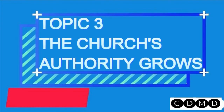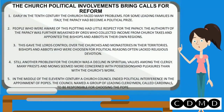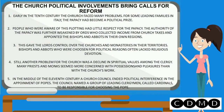Topic 3: The Church's Authority Grows. The Church's political involvement brought calls for reform. Early in the 10th century, the Church faced many problems. For some ruling families in Italy, the papacy had become a political prize. People who were aware of this plotting had little respect for the papacy. The authority of the papacy was further weakened by lords who collected income from church taxes and appointed bishops and abbots in their own regions, giving lords control over churches and monasteries in their territories.